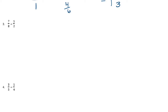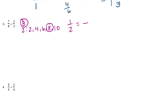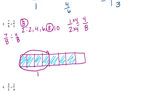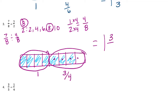Number three: seven-eighths divided by one-half. Find the common denominator for eight and two — starting with the smaller, multiples of two hit eight quickly. Leave seven-eighths alone; one-half times four is four-eighths. So we have seven-eighths divided by four-eighths. Shade in seven-eighths, split into groups of four-eighths: one group of four, then three shaded out of the next four. This equals one and three-fourths.